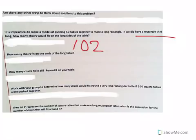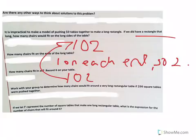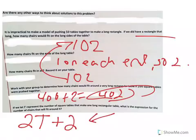So how many chairs fit on the ends of the long table? Well, just two chairs, right? One on each end. So two. How many chairs fit in all? Well, 102, right? We already solved that if we have the 50. It depends on how many tables there are, but if we're still talking about the 50, then we'd have 102. Okay, we solved the 200, right? 200 square tables. 200 times 2 is 400, plus 2 gives us 402. If we let t represent the number of square tables that make one long rectangle, what's that expression again, then? Well, it's t is the number of tables times 2, so 2t. And then you have to add the 2 at the end. So this is our expression that would tell us how many people would fit at the table every single time.